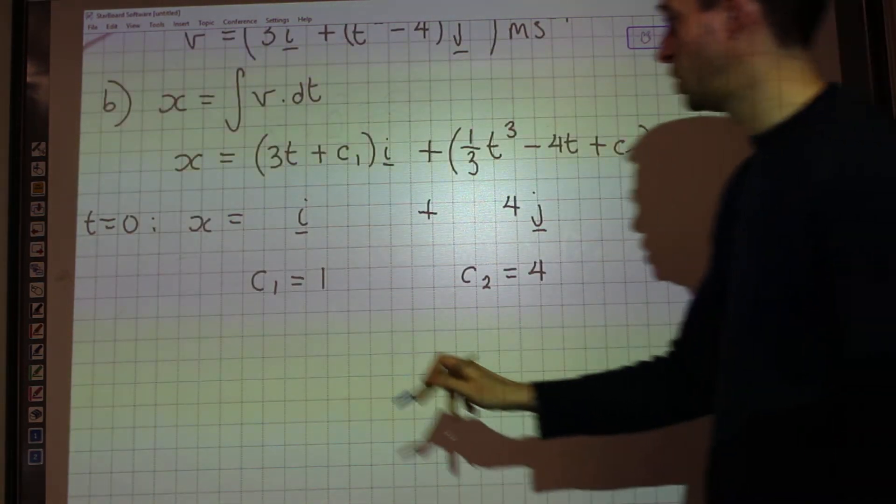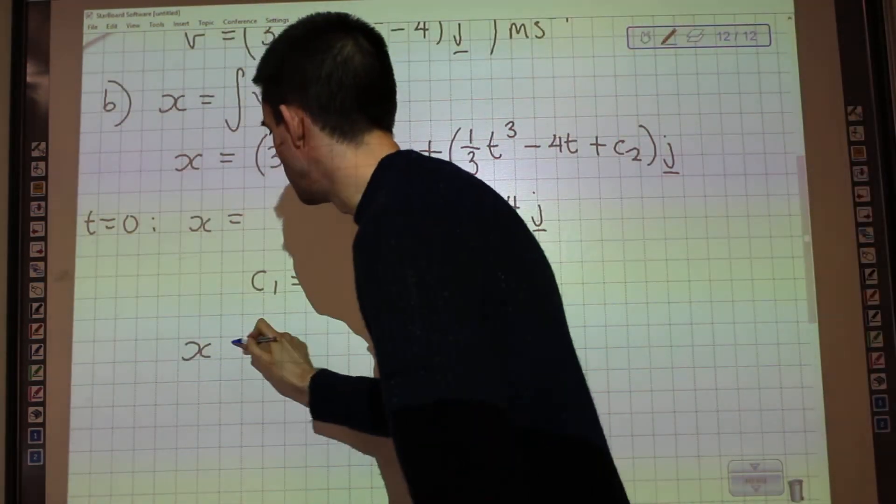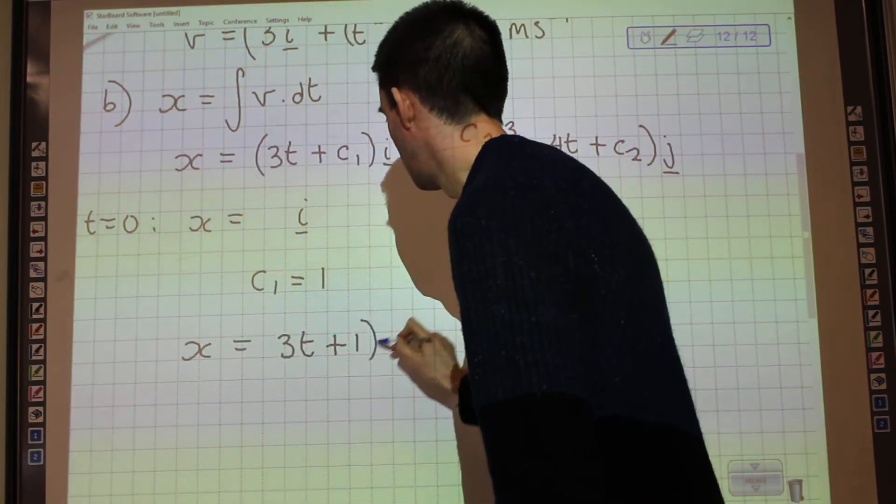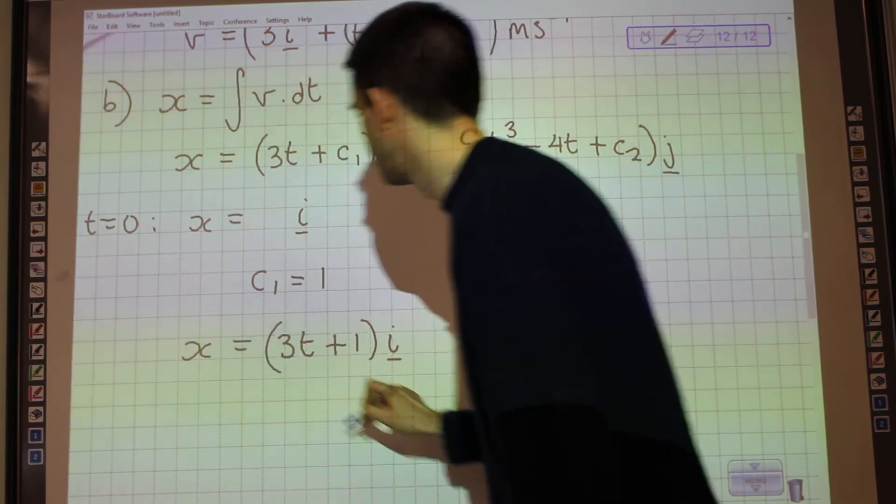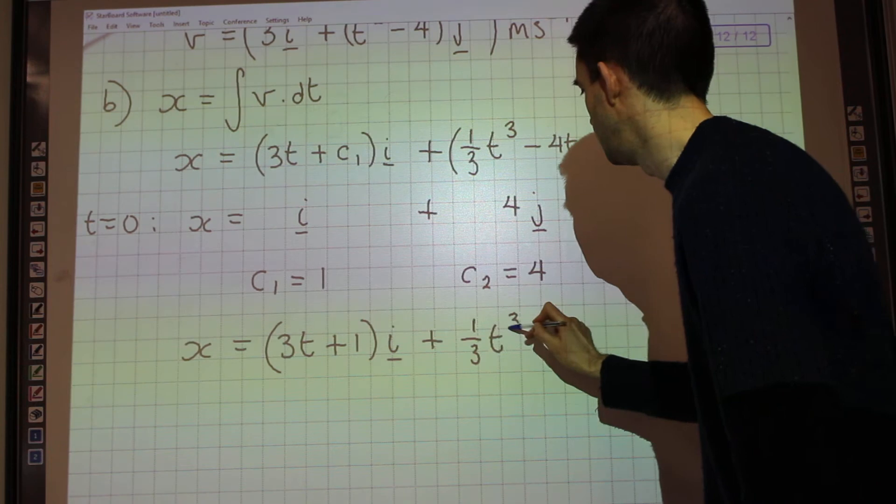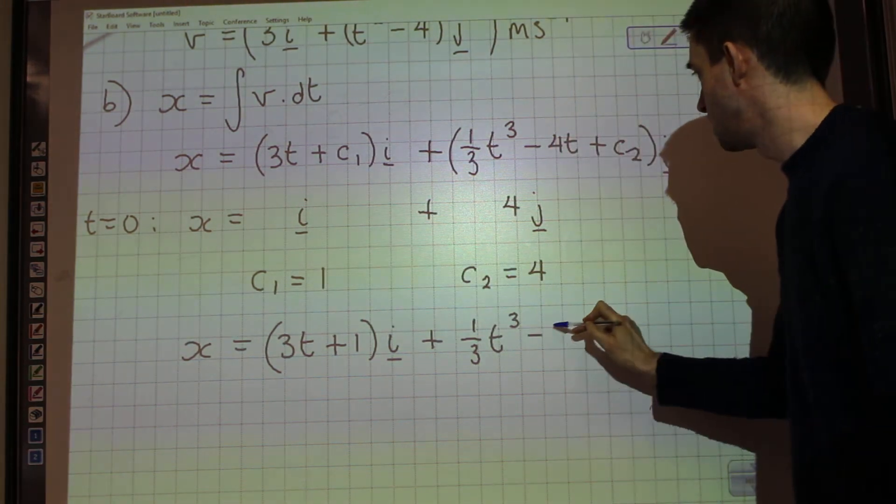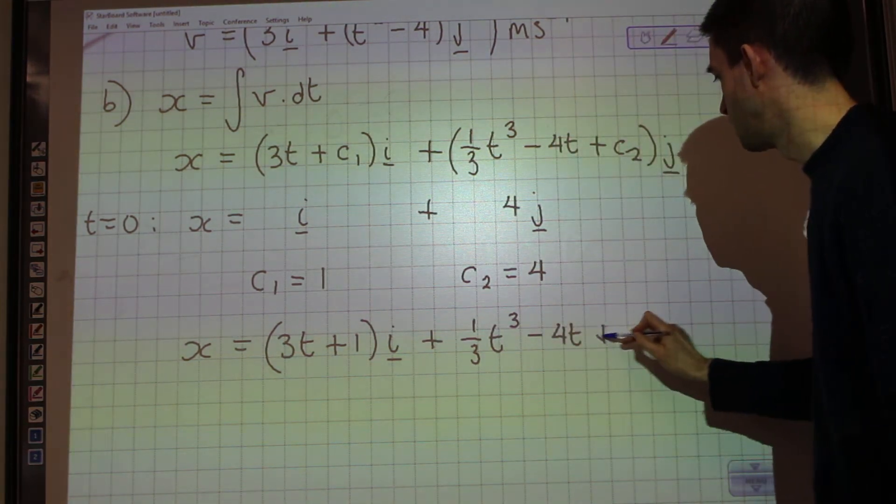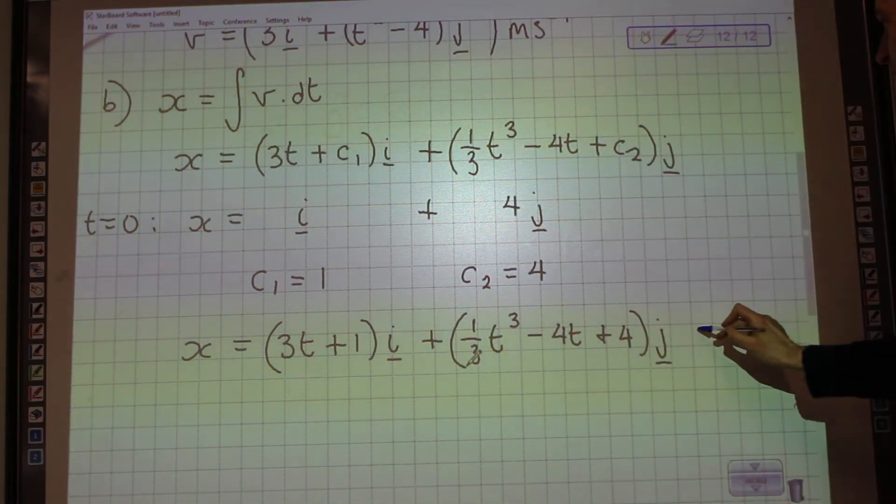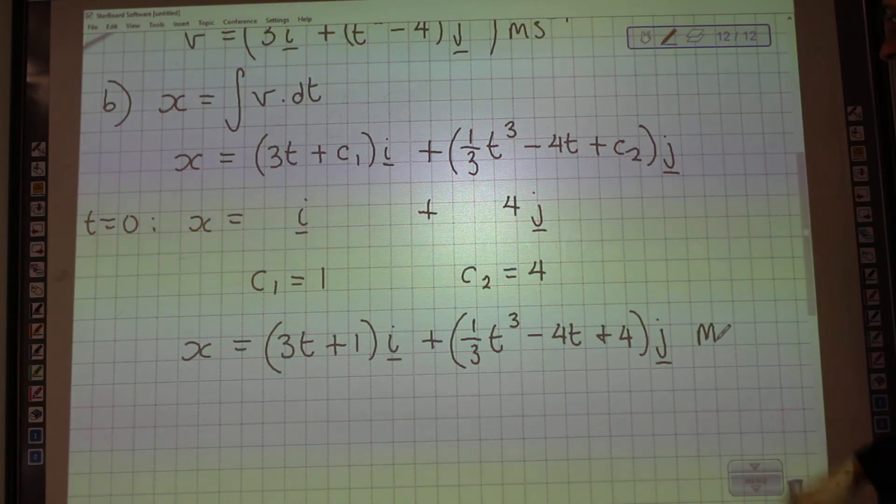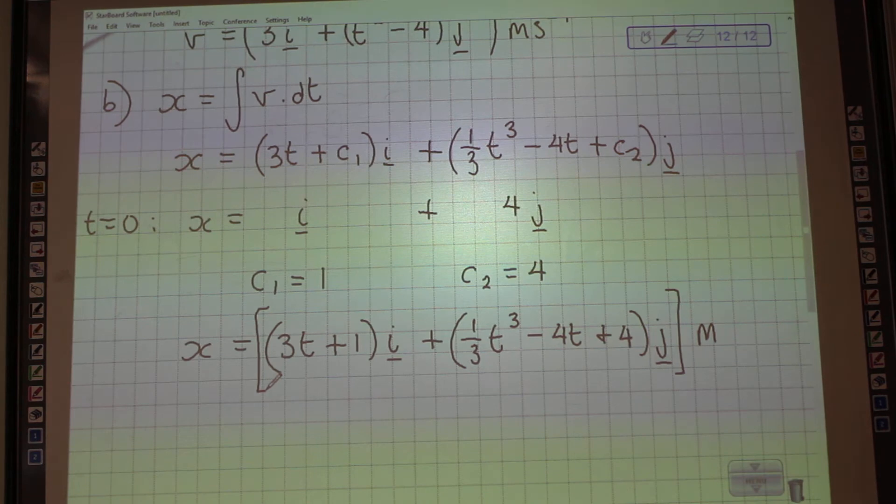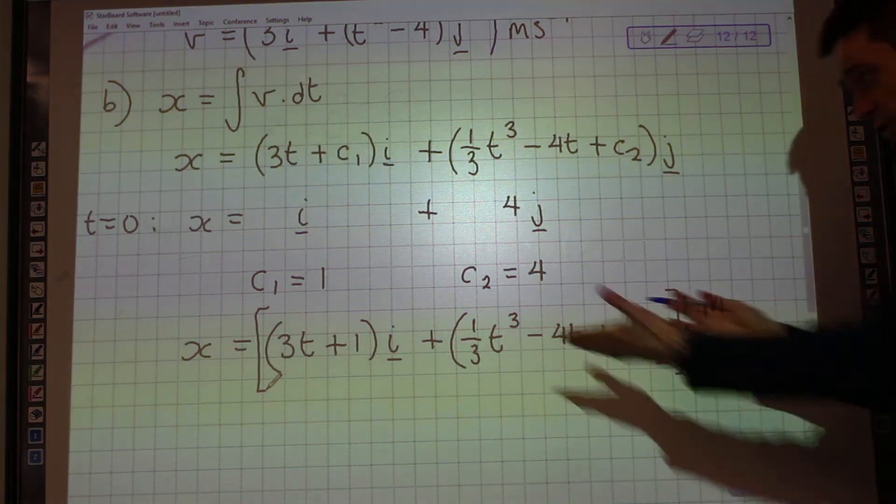And therefore, I can express the position of p using the equation x equals 3t plus 1i plus 1 third t cubed minus 4t plus 4j. And because that's position, that's in meters. Part b, position vector, done.